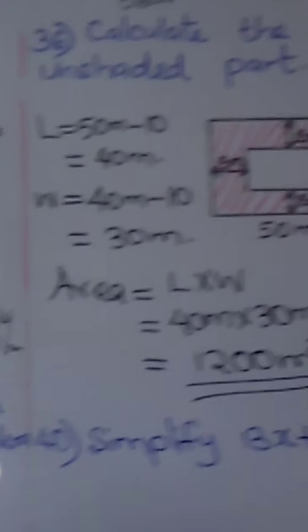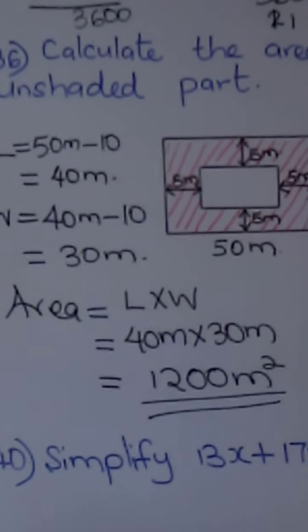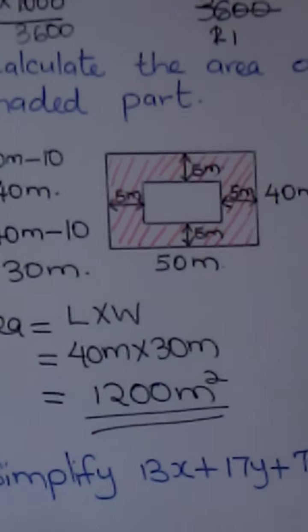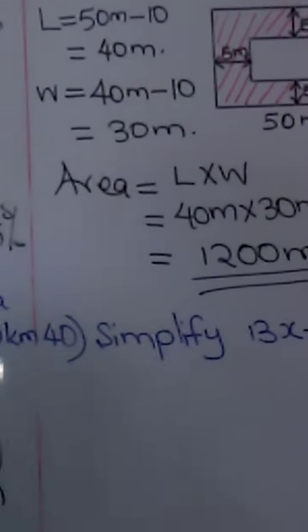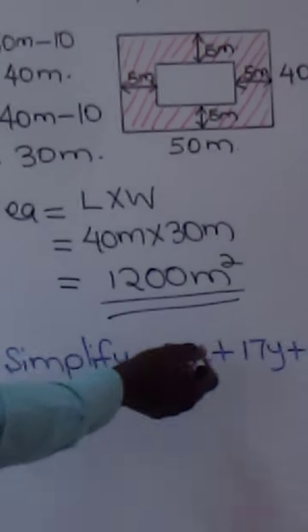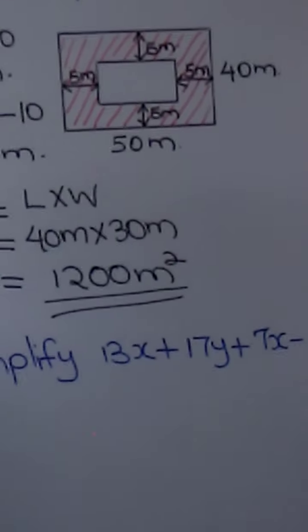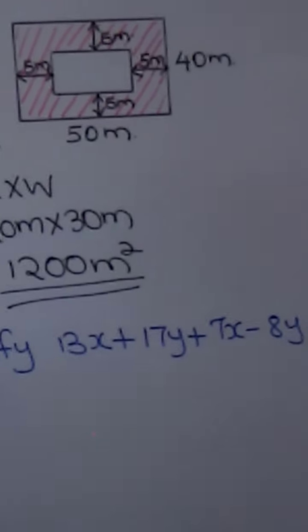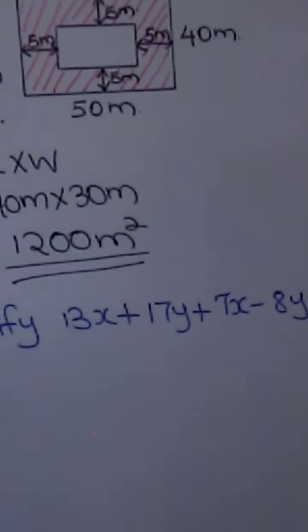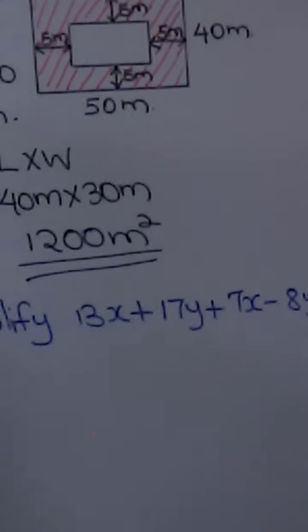Let's go to question number 40: simplify this algebraic expression. It is 13x + 17y + 7x − 8y. We collect like terms.